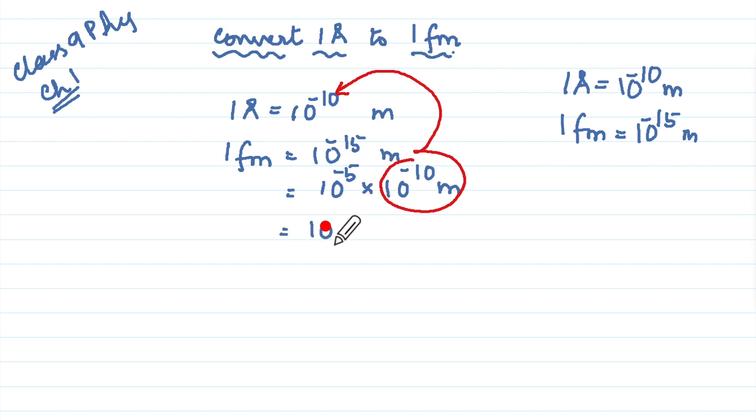So I am going to write 10 to the power minus 5 times 1 angstrom. So 10 to the power minus 5 angstrom units make up 1 femtometer.